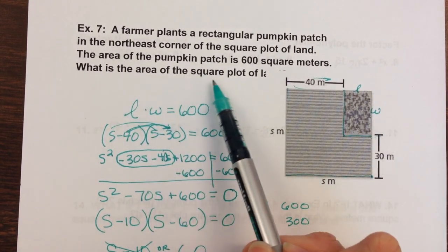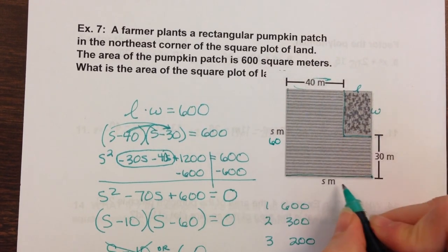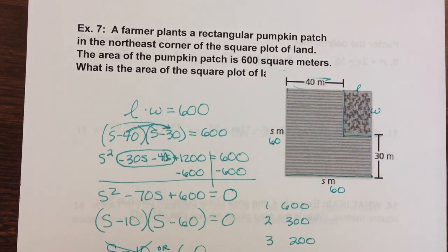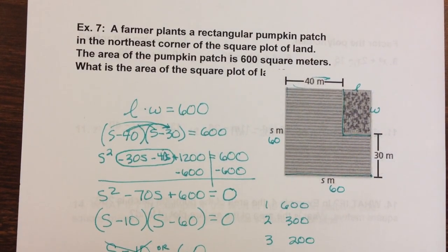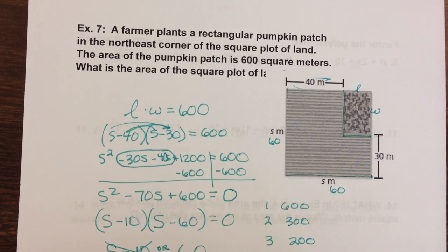The question asks me, what is the area of this square plot of land? So if s is 60, that means that this is 60. So 60 times 60 would equal 3600. So the area of my farm is 3600 square meters, it looks like.